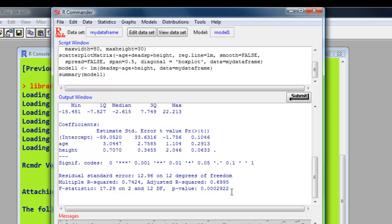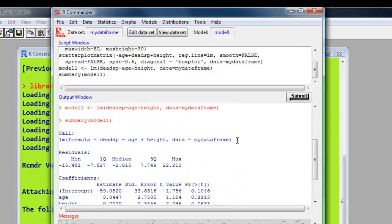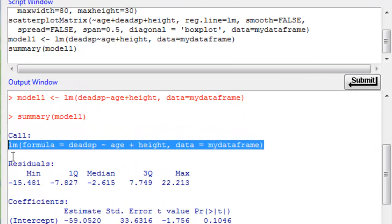Also, we can see here what we selected in that option in R Commander produced R code, and it's very similar to what we did in the first linear regression, simple linear regression YouTube video. So all it's done is added another variable plus height.